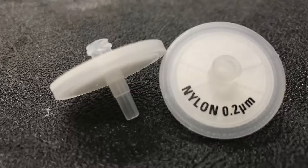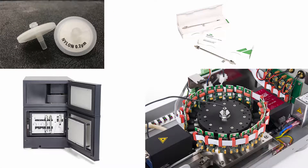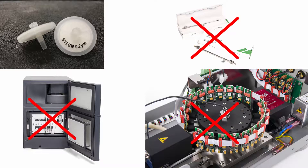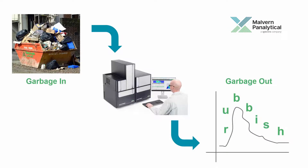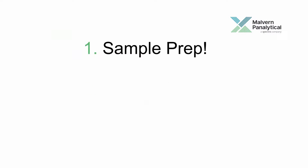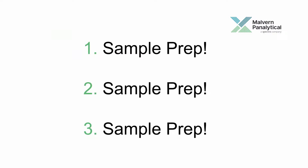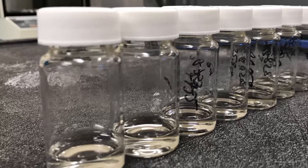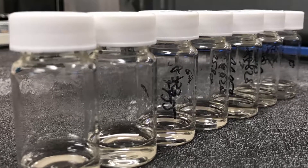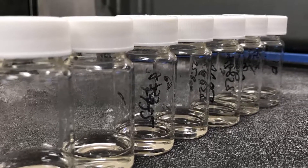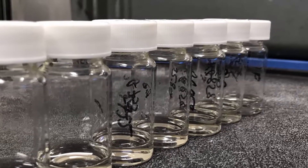At best, these insoluble materials will be removed prior to injection. At worst, they'll get stuck in expensive system components, such as the columns or detectors. If you inject a bad sample into the system, you can expect to get bad results back out. The three most important factors for generating good data are sample prep, sample prep, and sample prep. This video will demonstrate how to prepare a sample for GPC-SEC analysis to maximize data accuracy and system health.